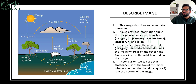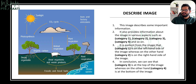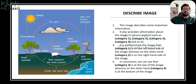Looking at the template, it says category one, two, three, and four — meaning we just need four categories from the image. To keep it simple, I'll just pick colors: blue, green, brown, and yellow. The first sentence is: 'The image describes some important information.' The second sentence is: 'It also provides information about the image in various aspects such as blue, green, brown, yellow, and so on.' That's how I fit the four colors into the second sentence.